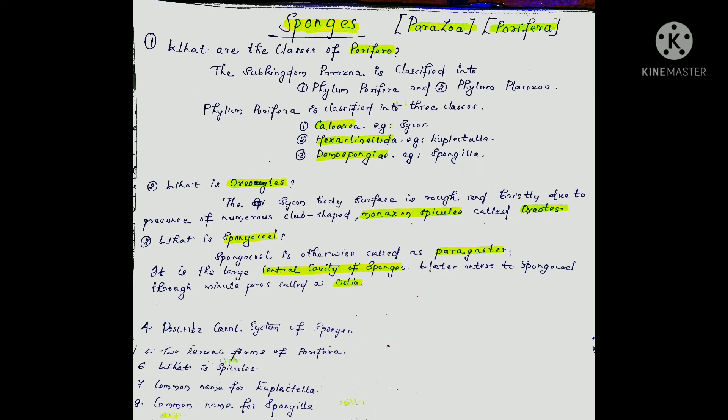The next question is: what is Oxeotes? Oxeotes (O-X-E-O-T-E-S) — the body surface is rough and bristly due to the presence of numerous club-shaped monaxon spicules called Oxeotes. The spicules give a rough and bristly appearance to the body surface. The skeleton consists of calcium.